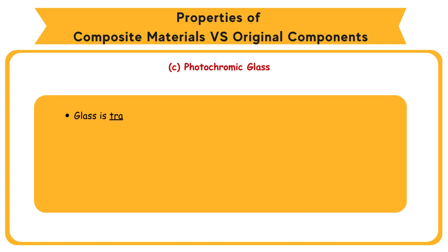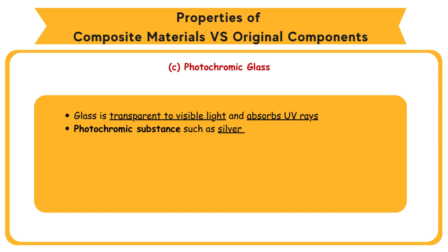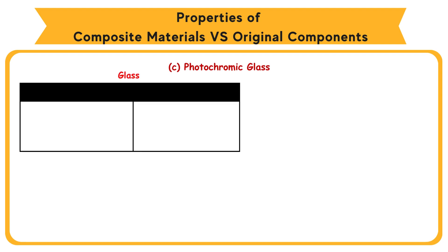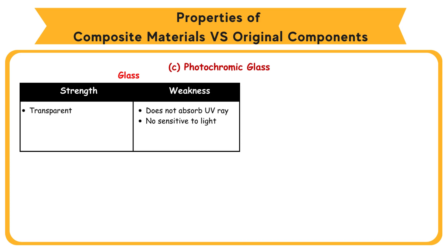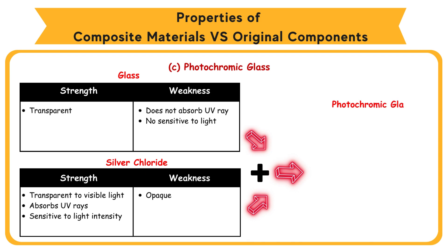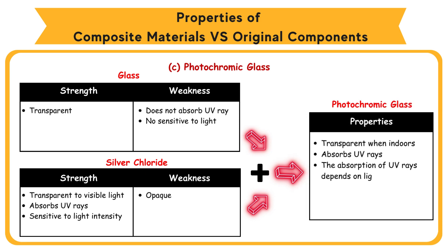C: Photochromic glass. Glass is transparent to visible light and absorbs UV rays at the same time. Photochromic substances such as silver chloride (AgCl) and silver bromide (AgBr) are added to lenses. Reaction: 2AgCl → 2Ag + Cl₂. Glass strengths: transparent. Weakness: does not absorb UV rays, not sensitive to light. Silver chloride strengths: transparent to visible light, absorbs UV rays, sensitive to light intensity. Weakness: opaque. Glass combined with silver chloride becomes photochromic glass with properties: transparent when indoors, absorbs UV rays, and the absorption of UV rays depends on light intensity.